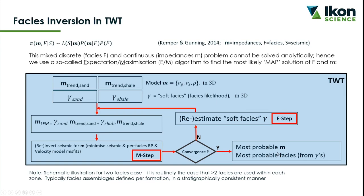What gets output is the most likely elastic properties and the most likely facies — fundamentally constrained and tied to one another. If a location is classified as sand facies, it will have elastic properties that fit within the rock physics model characteristics for that facies, and likewise for shale.